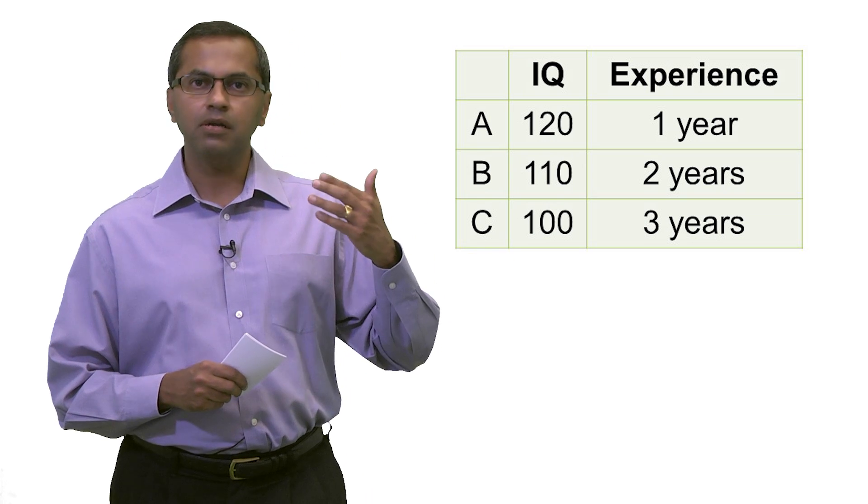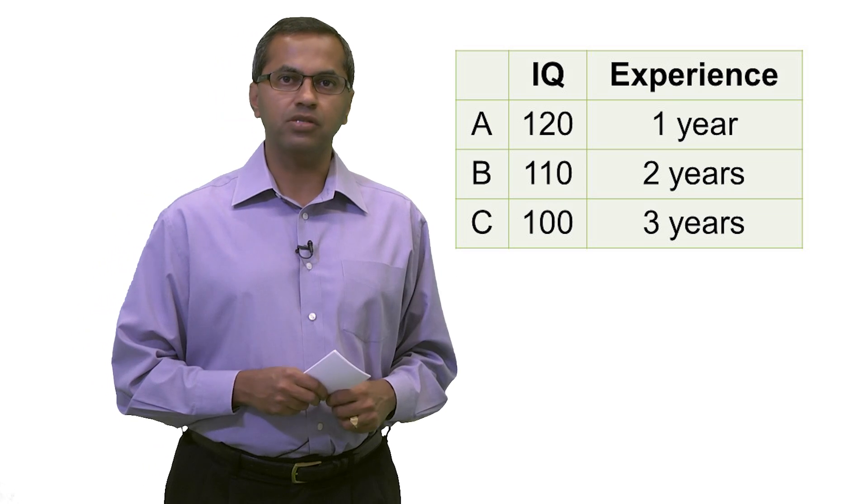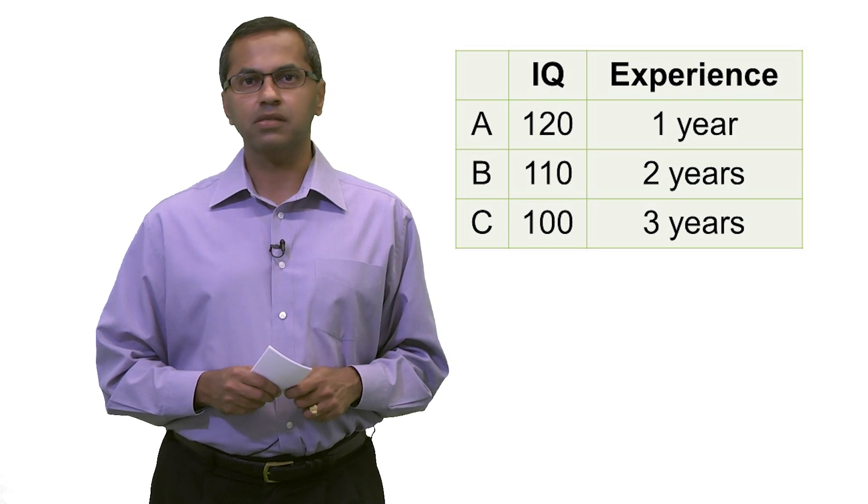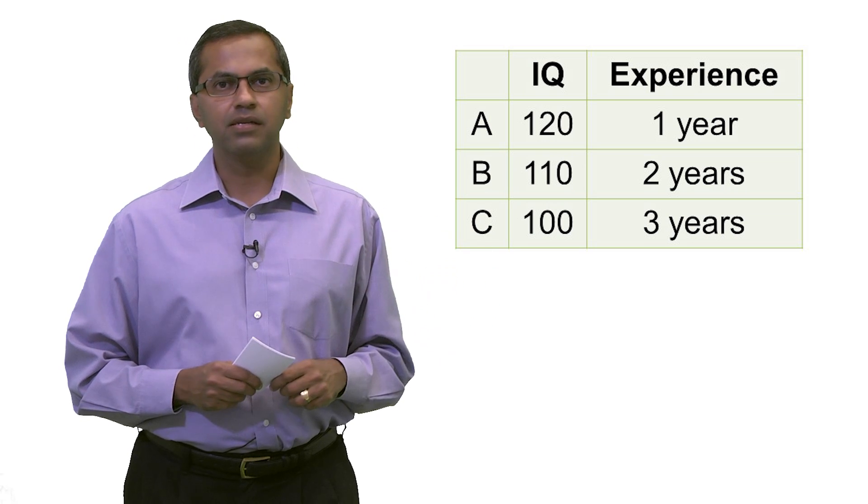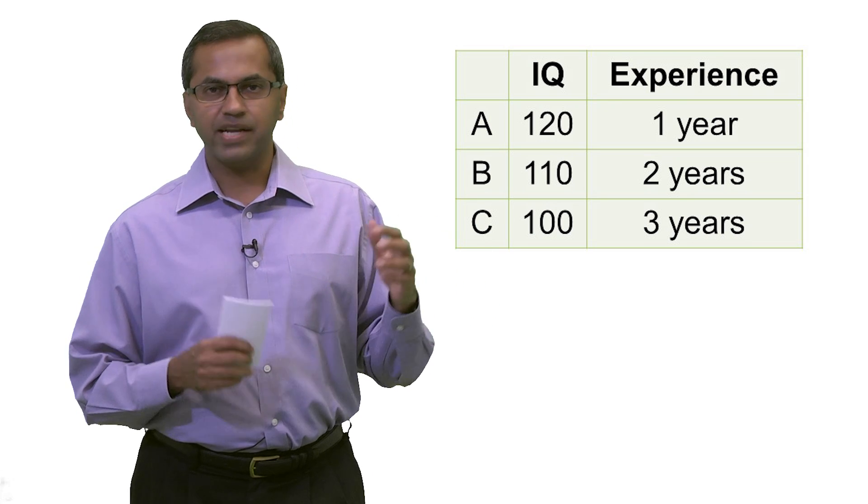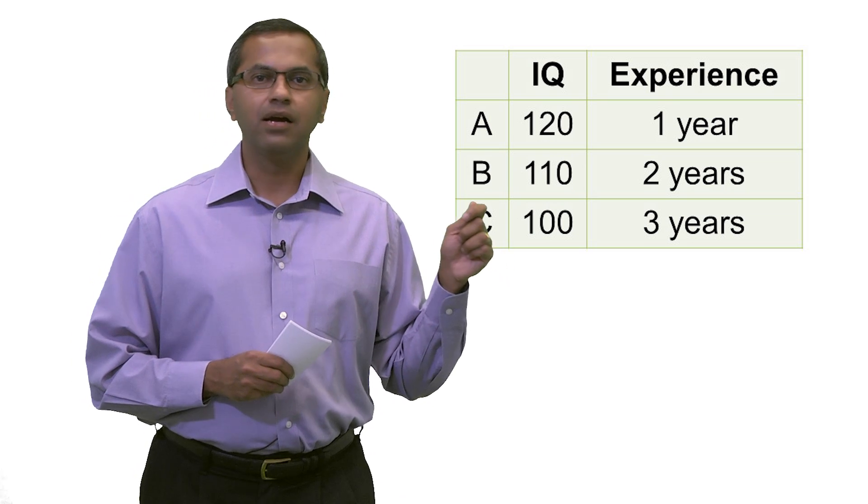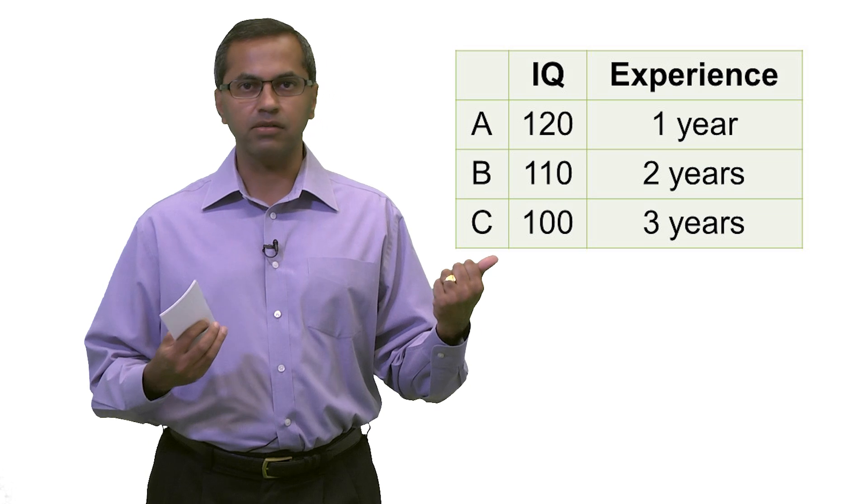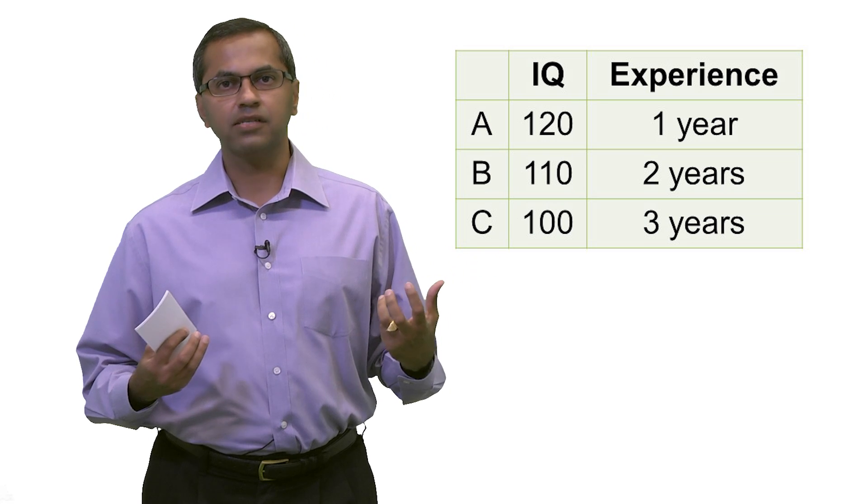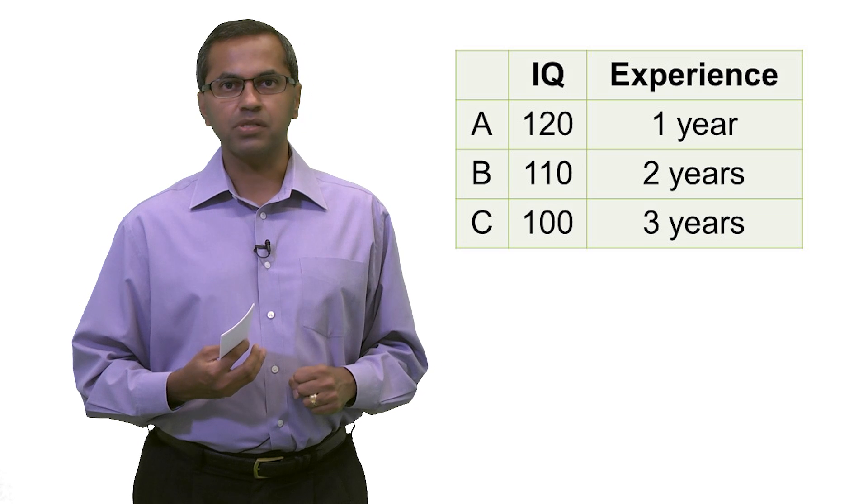So if I apply my rule of decision making, here's what it's going to tell me: It's going to tell me that I will prefer Mr. B over Mr. A because they're about equally intelligent, but B has more experience. And likewise, I would prefer C over B. However, if I now look at the whole picture, I will end up preferring A over C because now the difference between 120 and 100 is significantly large that by my rule, I end up picking the more intelligent person.